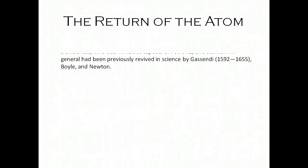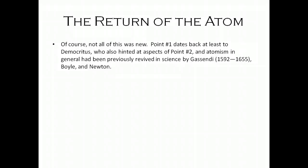Democritus actually believed that different atoms had different shapes. Some atoms were pointy, and some were round and smooth. If they were round and smooth, they would taste sweet; if they were pointy, they would taste sour. Democritus was a true materialist — he didn't believe in anything spooky. He thought it had to have a physical cause. If it's sour, something's physically going on in your mouth: atoms must be pointy. If it's sweet, they're nice and smooth, rolling across your tongue.